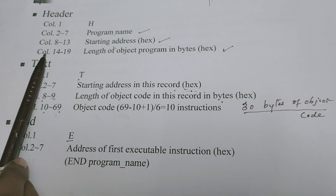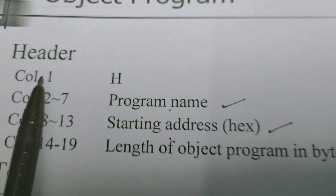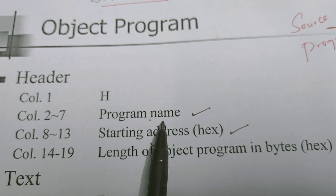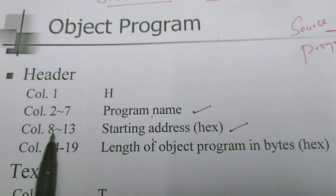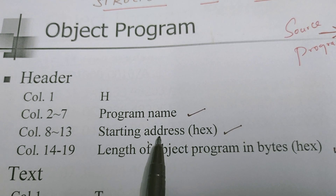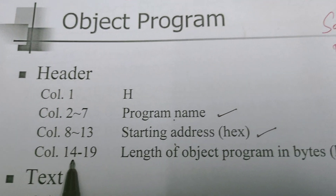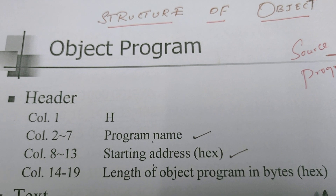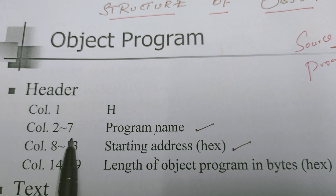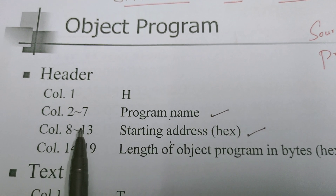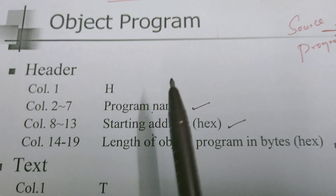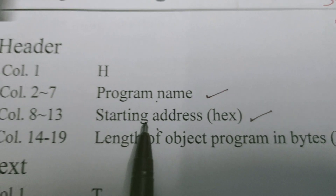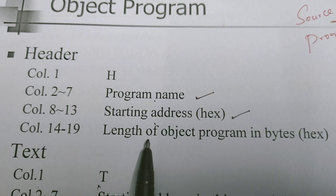Let us see what is there in the header record. Column 1 contains the letter H. Columns 2 to 7 contain the name of the program — totally 6 columns. Columns 8 to 13 contain the starting address of the program. Then columns 14 to 19 — once again 6 columns — contain the length of the entire object file. So the header record contains three important pieces of information: the name of the program, the starting address of the program, and the length of the entire object program.